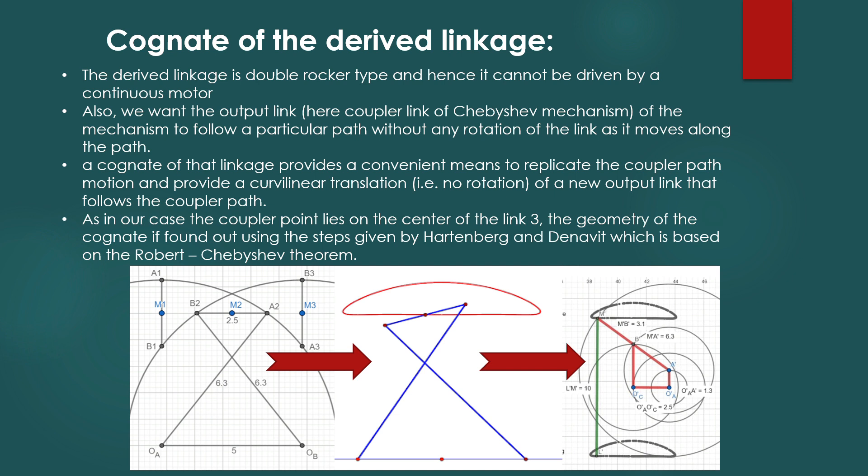As in our case the coupler point lies on the center of link 3, the geometry of the cognate is found out using the steps given by Hartenberg and Denavit which is based on the Robert-Chebyshev theorem.